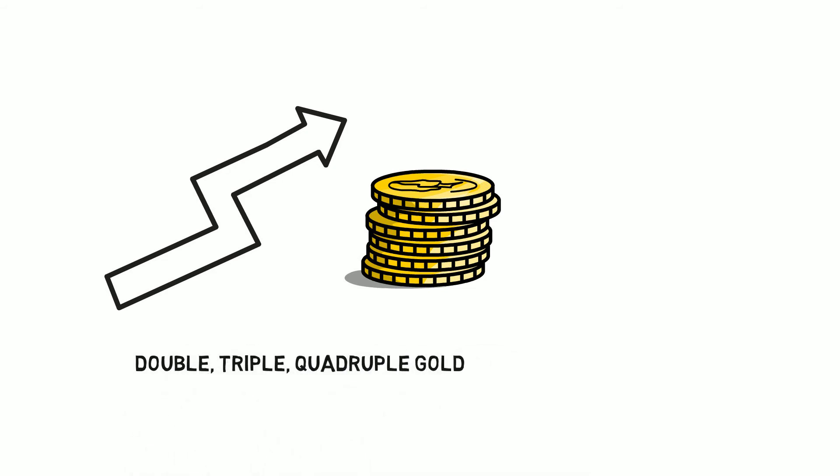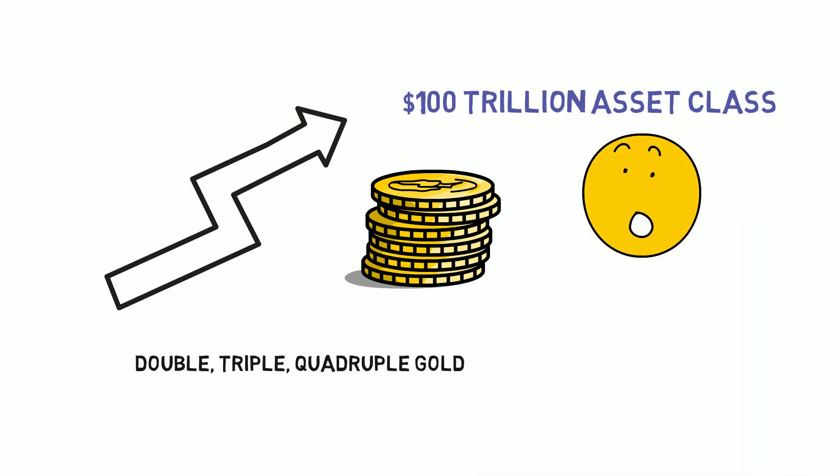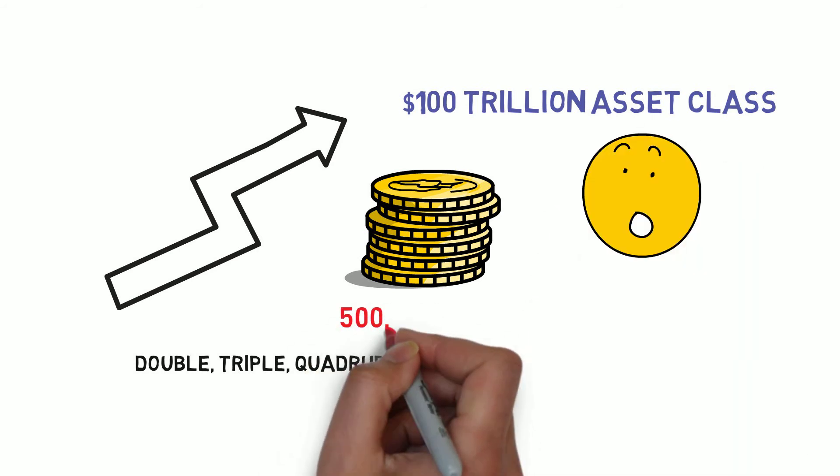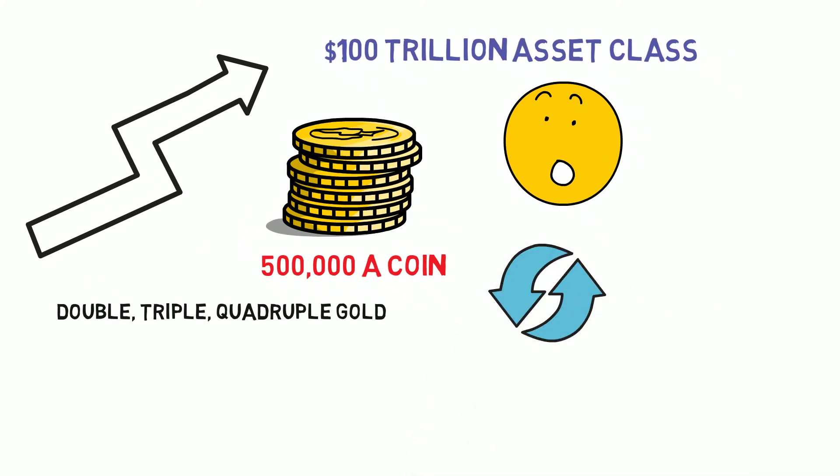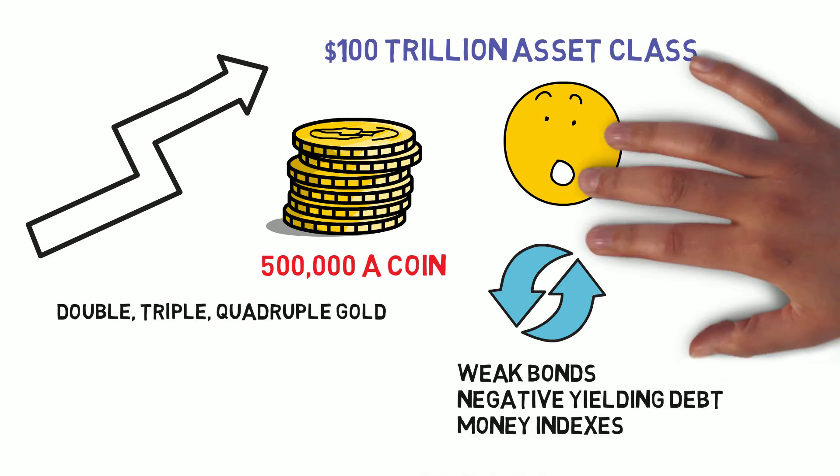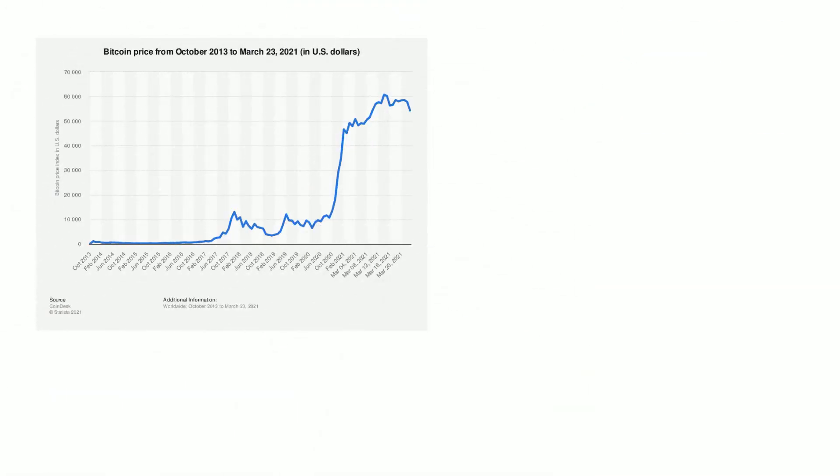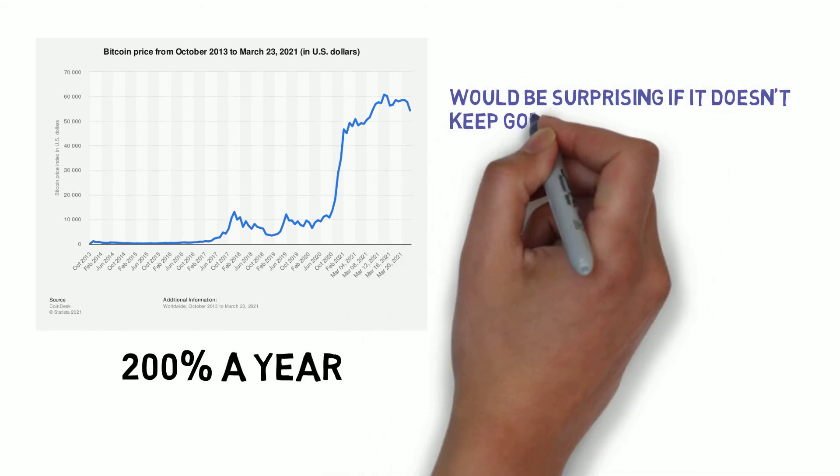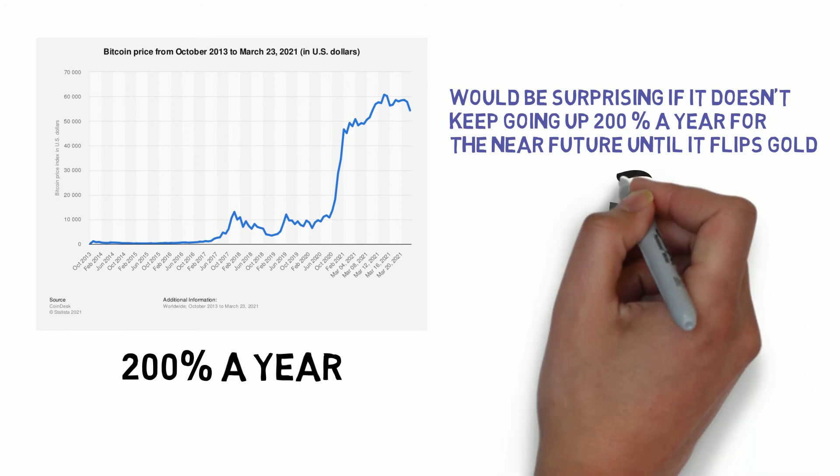Eventually it will become a 100 trillion dollar asset class. So at gold, it's worth 500,000 a coin. And when it replaces the 100 trillion in treasury assets like weak bonds and negative yielding debt and the money indexes, it will be 5 million dollars a coin, Michael said. So it's going up to 100% a year. It would be surprising if it doesn't keep going up 200% a year for the near future until it flips gold.